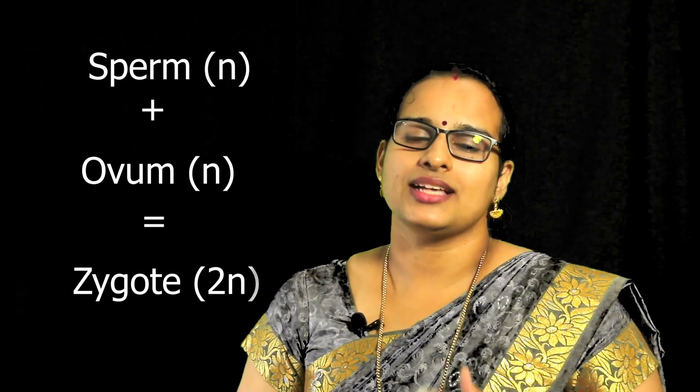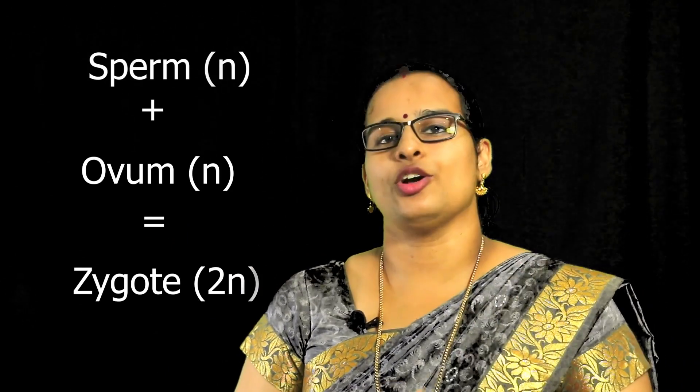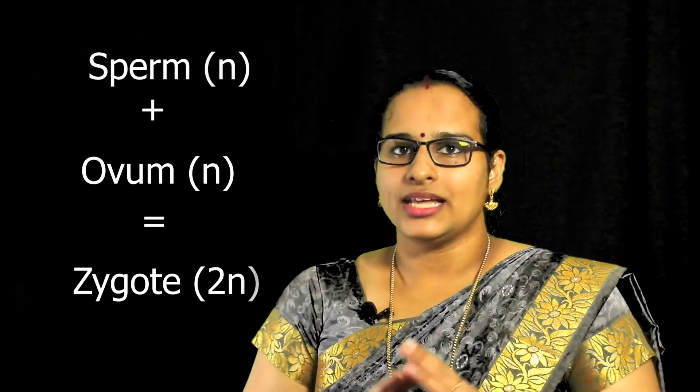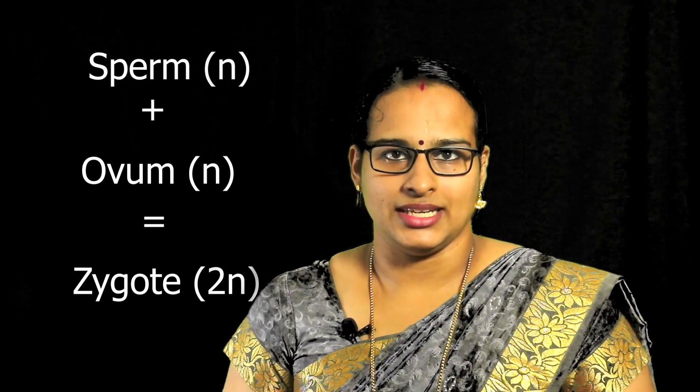This single diploid cell is called a zygote. It has 46 chromosomes. That is the process of fertilization.